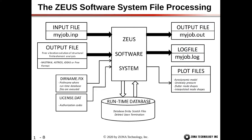Additionally, the input to Zeus is the output file of the free vibration solution from the structural finite element analysis. Generally we use MSC Nastran, but we also support Astros, Ideas, and Freeformat. These are the main two inputs to Zeus. When Zeus is installed, you define a file called dirname.fix, which contains the path where the runtime database is stored, and license.dat contains the appropriate license information for communicating with ZLS, the Zona License Server. These are set up once when Zeus is installed.